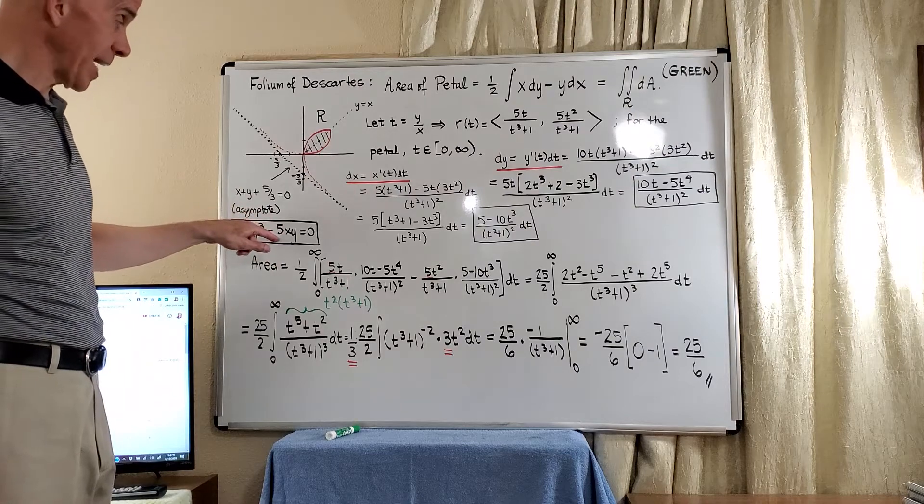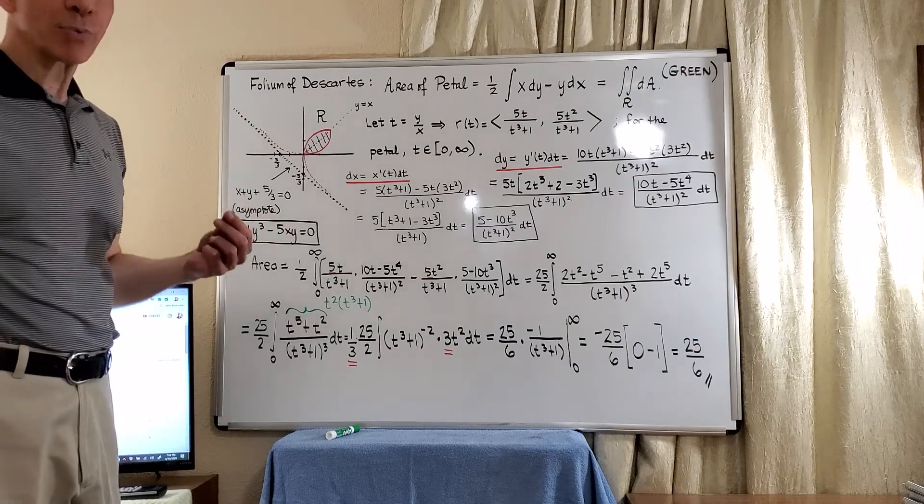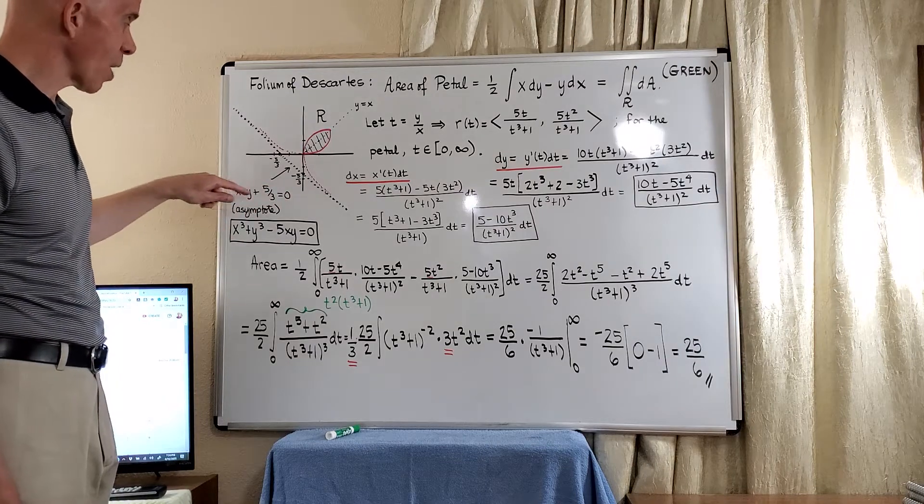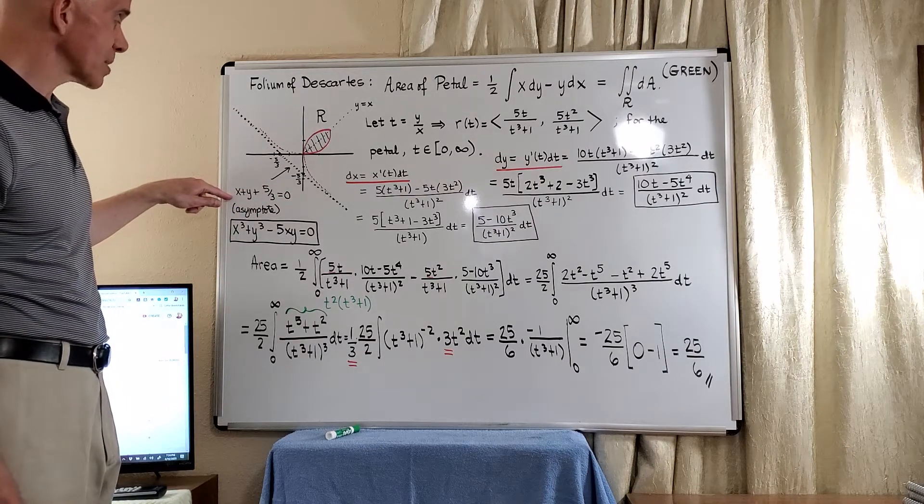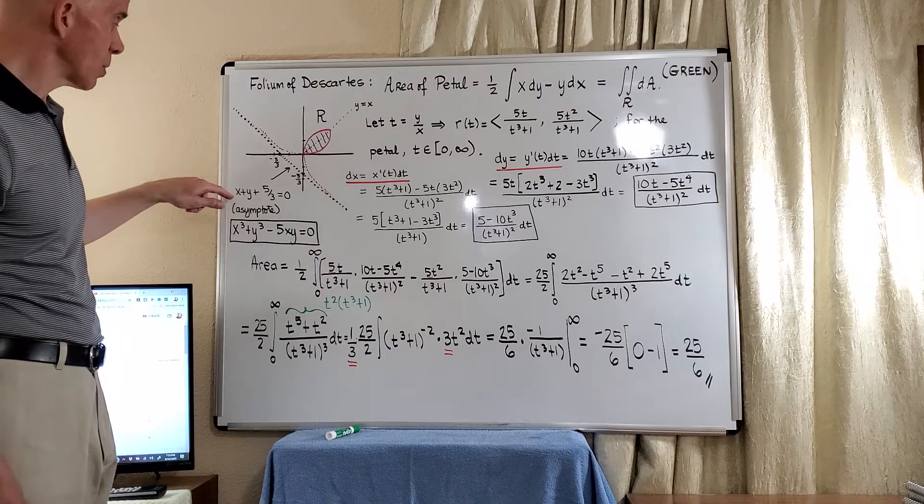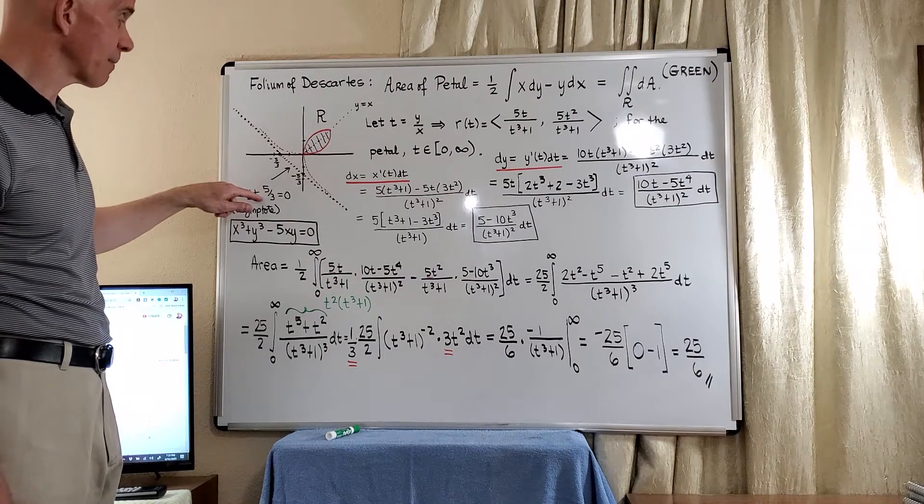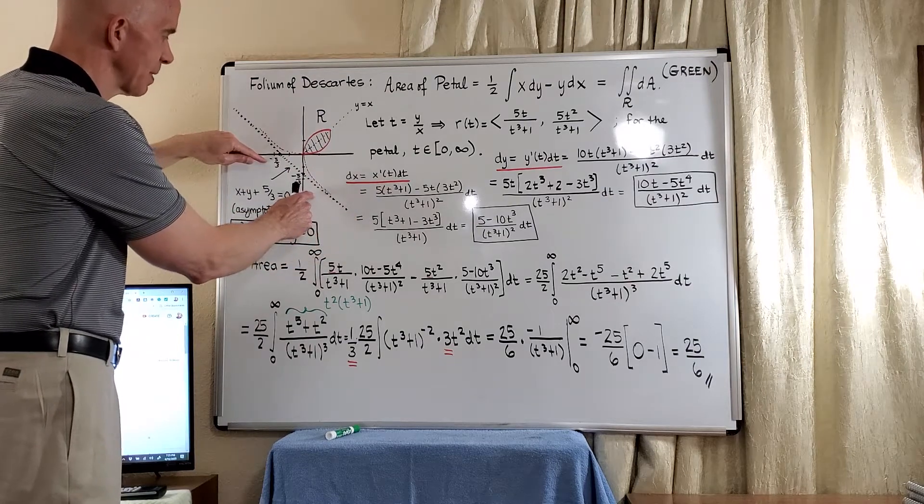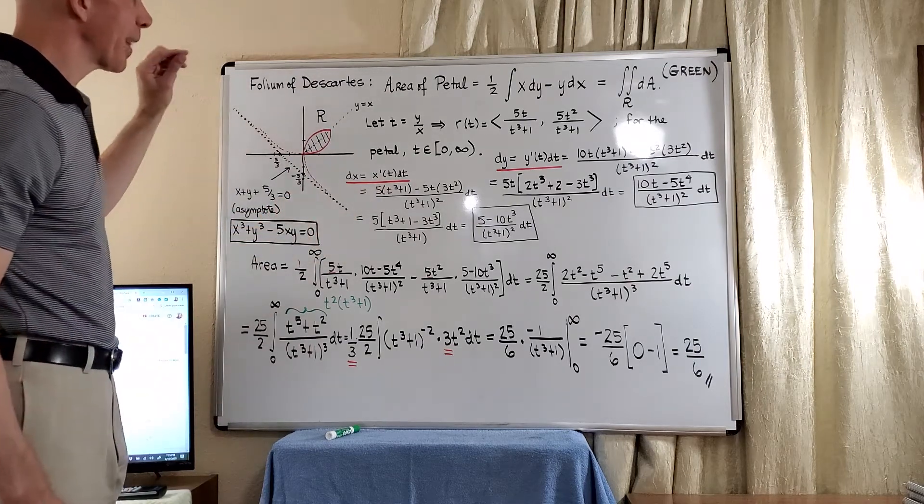With our negative 5 here, that would imply that our a would have to be 5 thirds. So we can actually write an equation for the asymptote for the folium, which is x plus y plus 5 thirds equals 0. This dotted line here has an x and y intercept of negative 5 thirds.